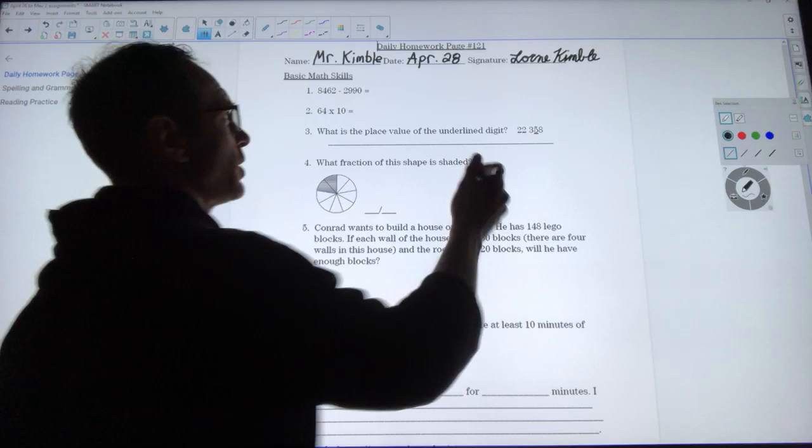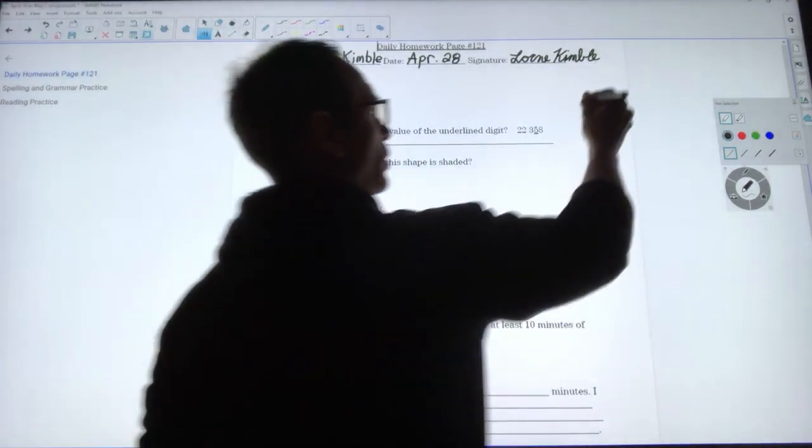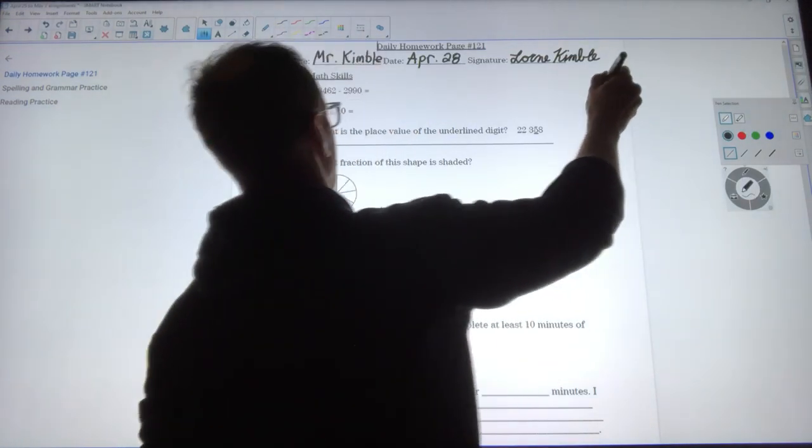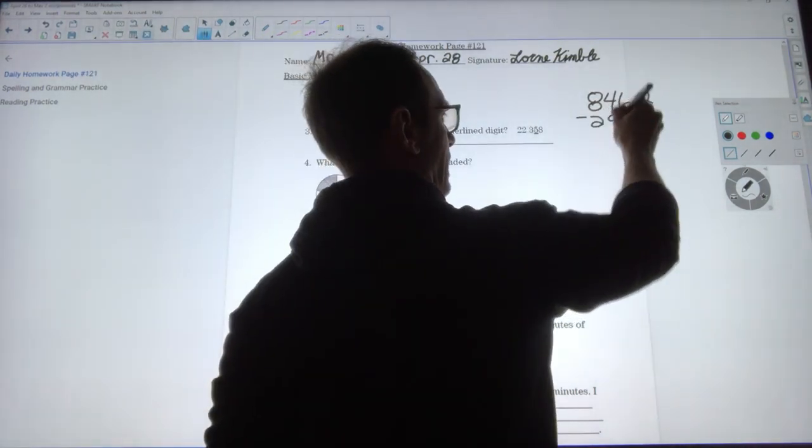My first question here 8462 minus 2,990. I'm gonna use the stacking method and it looks like I'm gonna have a little bit of borrowing to do, so 8462 and I'm gonna subtract 2,990.